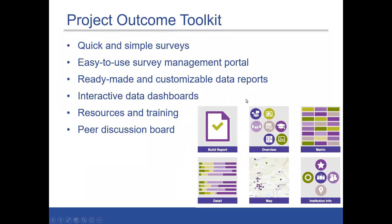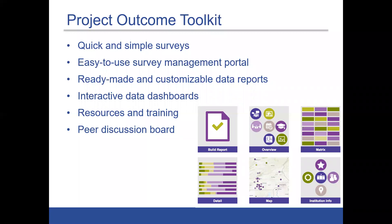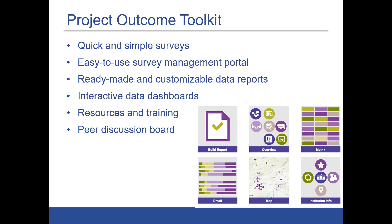For regular academic and research libraries, they have access to a set of quick and simple surveys all based on outcome measurement questions. There's a survey management portal where they can set up and administer those surveys. Once they collect some data they get ready-made and customizable data reports, plus interactive data dashboards that help them explore and analyze the data. We provide resources and training materials, and there's a peer discussion board where users can ask questions or share examples of their work.